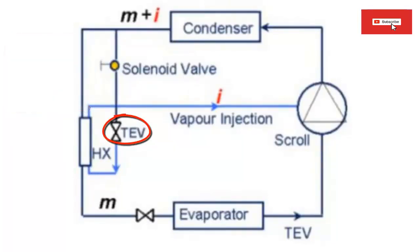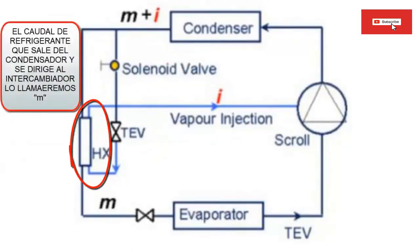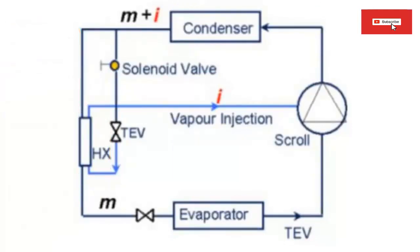5. Then a heat exchanger that we will call HX is required to produce subcooling of the capital that we will call M, which comes from the condenser. 6. The subcooling process of the capital M provides a greater capacity measured in the system.